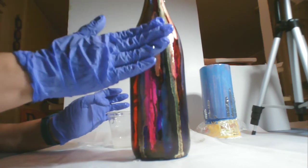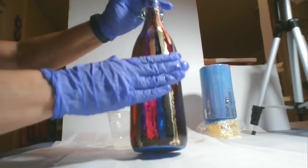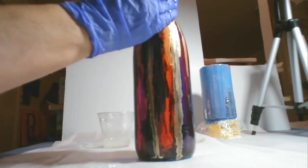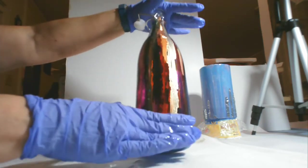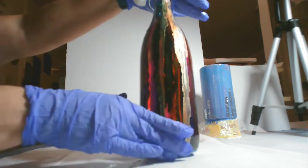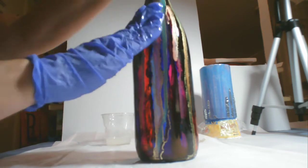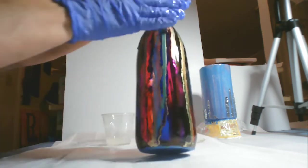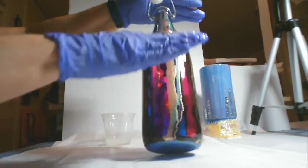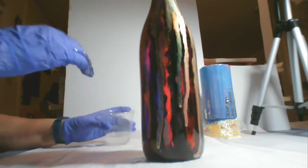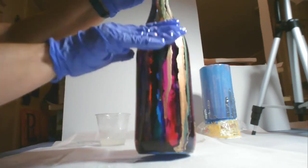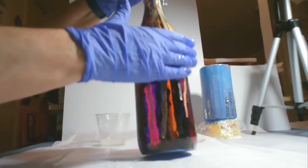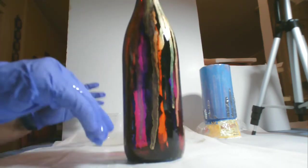Okay, let's get some resin on these. I've mixed it up - this is a one-to-one ratio. I'm just going to use my hand to get the resin onto the bottles. I can control where the resin is going. I can feel where I need to add resin and where I need to smooth it out more.